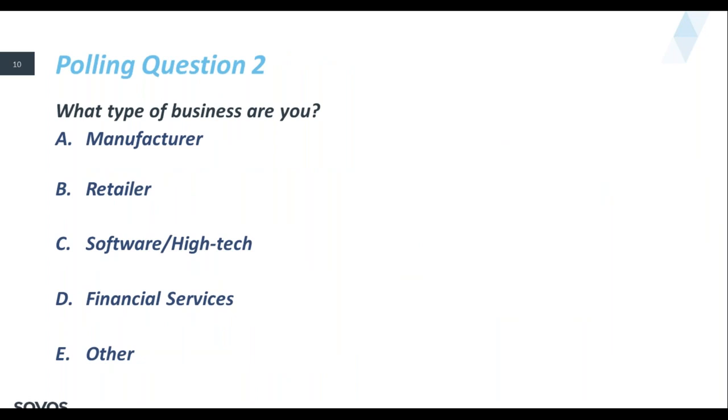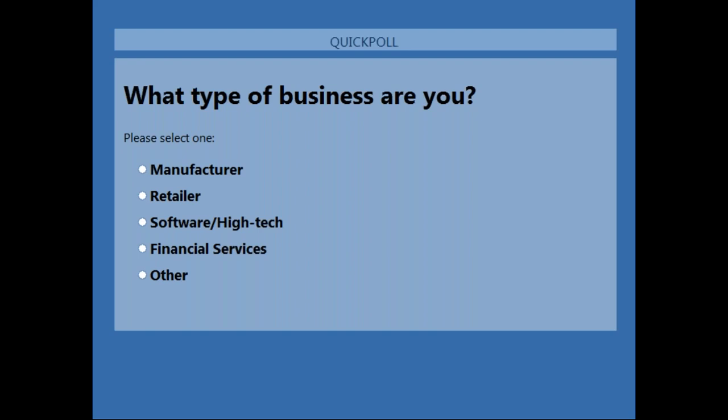Let's go to our second polling question and just get a feel for who's listening today: what type of business are you? Are you a manufacturer, a retailer, in software or high tech, financial services, or other? While that poll is open, we'll start talking about issues that we see in the AP process as we talk to our clients and gather information.